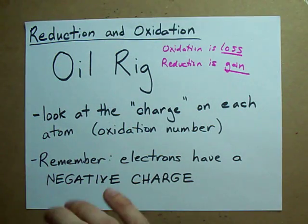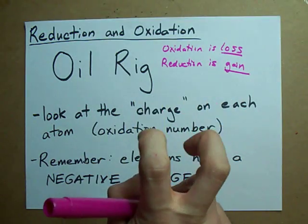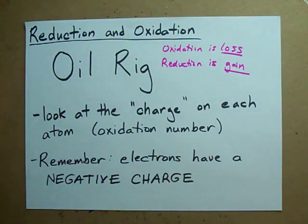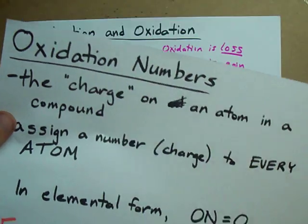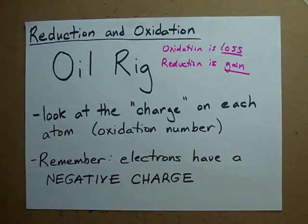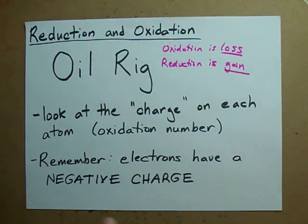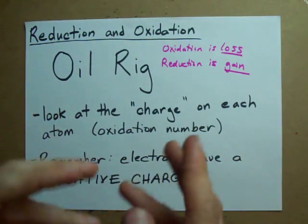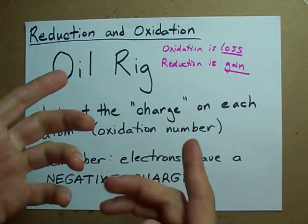Now, there's an official way to assign a charge to each of the atoms in a compound, and that's something called oxidation numbers. Feel free to take a look at that video, but you can also do this in a more informal way by just assuming that each of the atoms is going to have the charge that you would expect it to have.